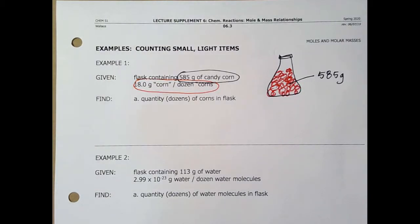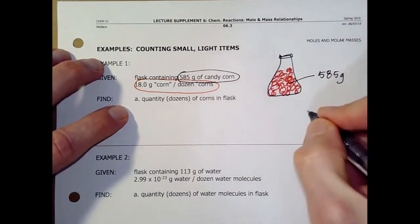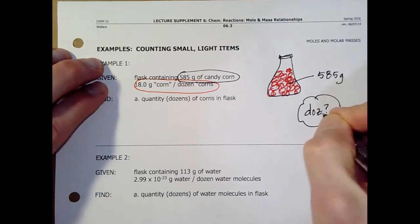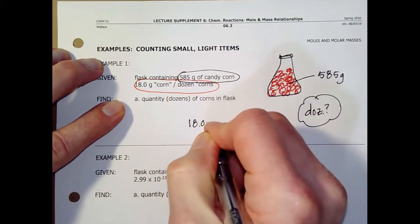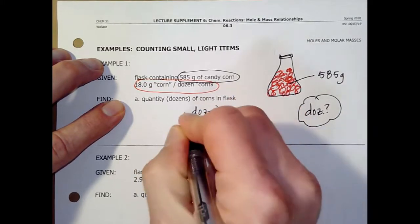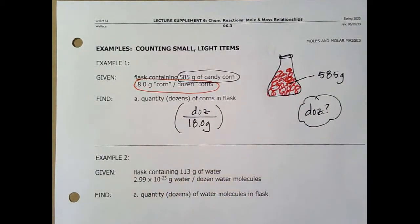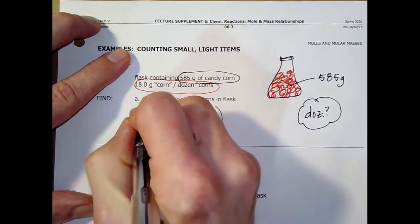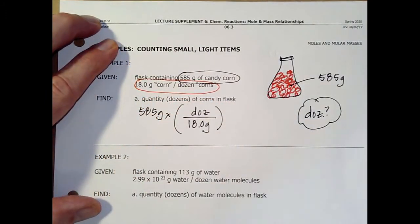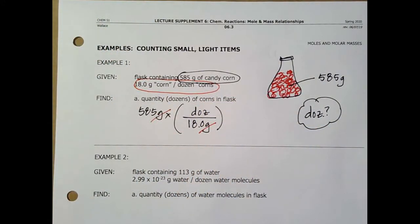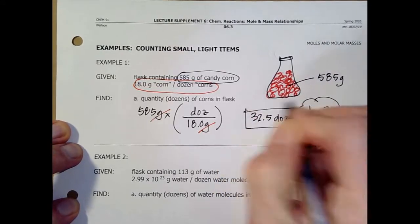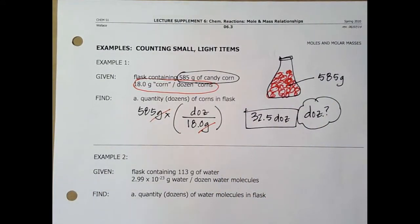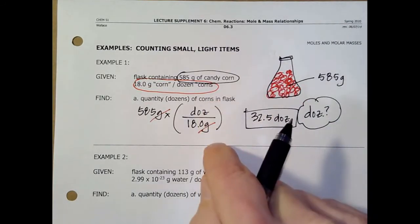Okay, here's how we're going to do it. If I know the weight of some individual or some quantity of candy corns, and I know the total weight, I want to know the dozens. And I know I've got this ratio: 18 grams per dozen. Now, I put dozen on top because I'm trying to get to dozen. Well, if I've got 585 grams, bingo. Chapter one. Grams cancel and I've got dozens. And that comes out to be 32.5 dozen. So the big idea in the first part of chapter six is we're going to count by weighing. I didn't have to count those. I knew the weight, I knew the weight per some quantity, and boom.